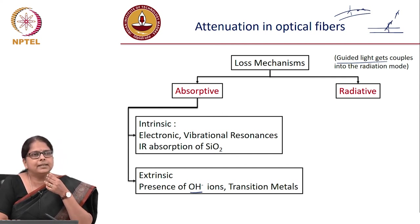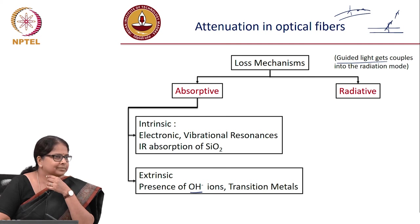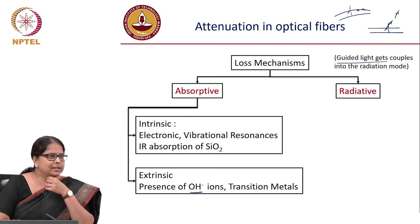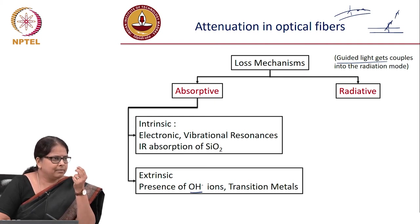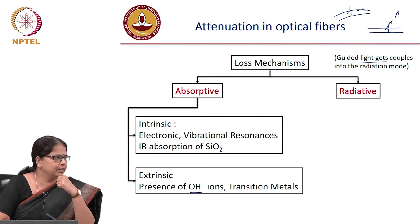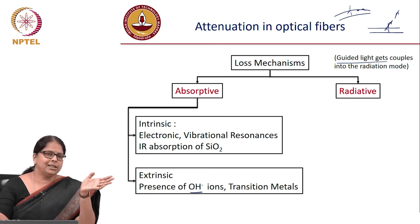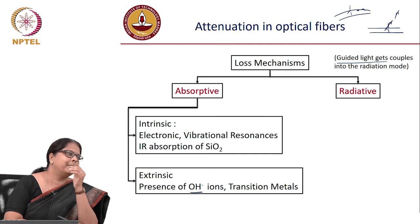Another source of radiative loss is Rayleigh scattering — the same phenomenon responsible for why the sky is blue. Small particles in the atmosphere, such as tiny moisture droplets, scatter light and change its direction. Importantly, scattering is a wavelength-dependent phenomenon.